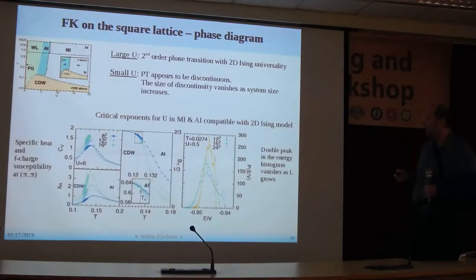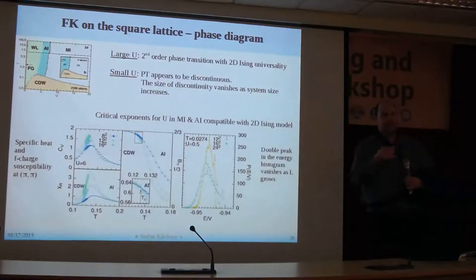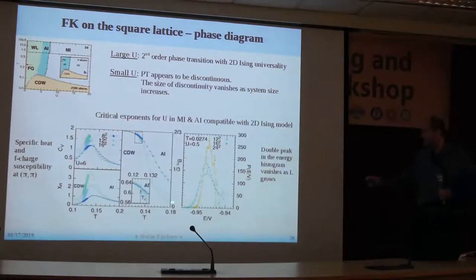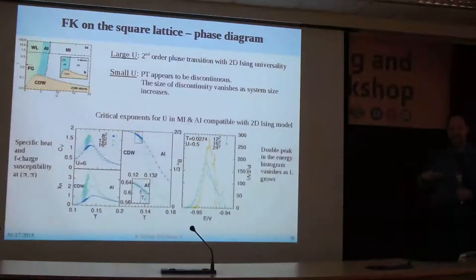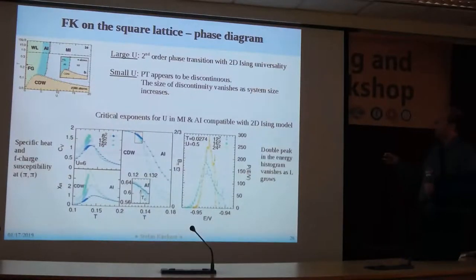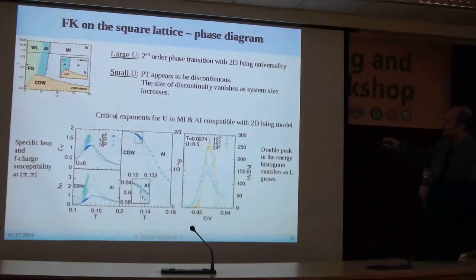But if you go to small U, we find that the phase transition in this model now appears to be discontinuous, and the size of the discontinuity actually goes away as system size increases. This is shown in the panel — it's taken from the WL part of the phase diagram and shows a double-peak structure. As system size increases, that goes away. And as it goes away, the Ising exponents extend further into the AI phase, which according to dual fermions was a metal.